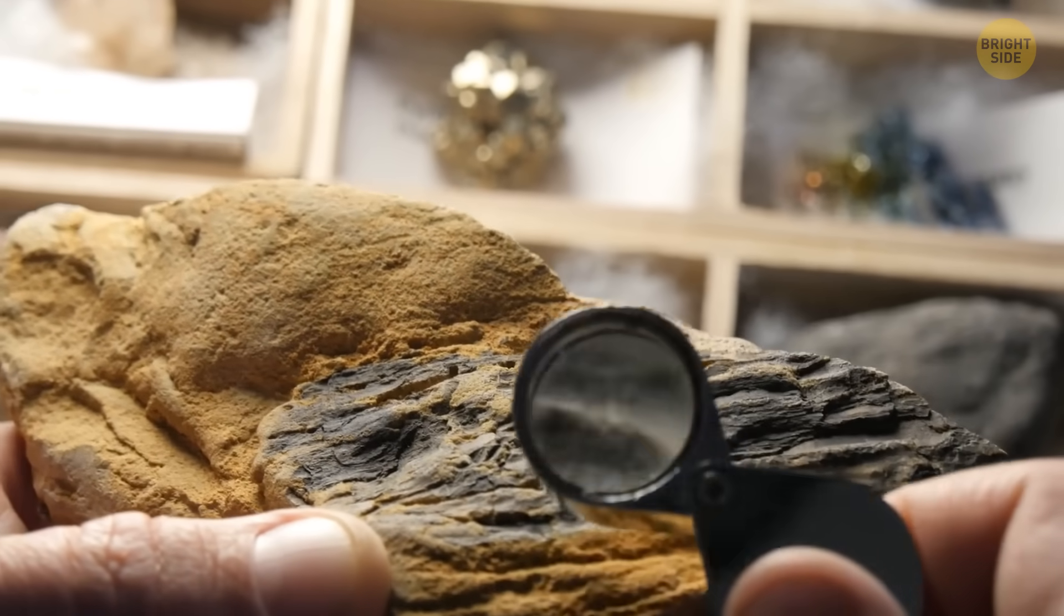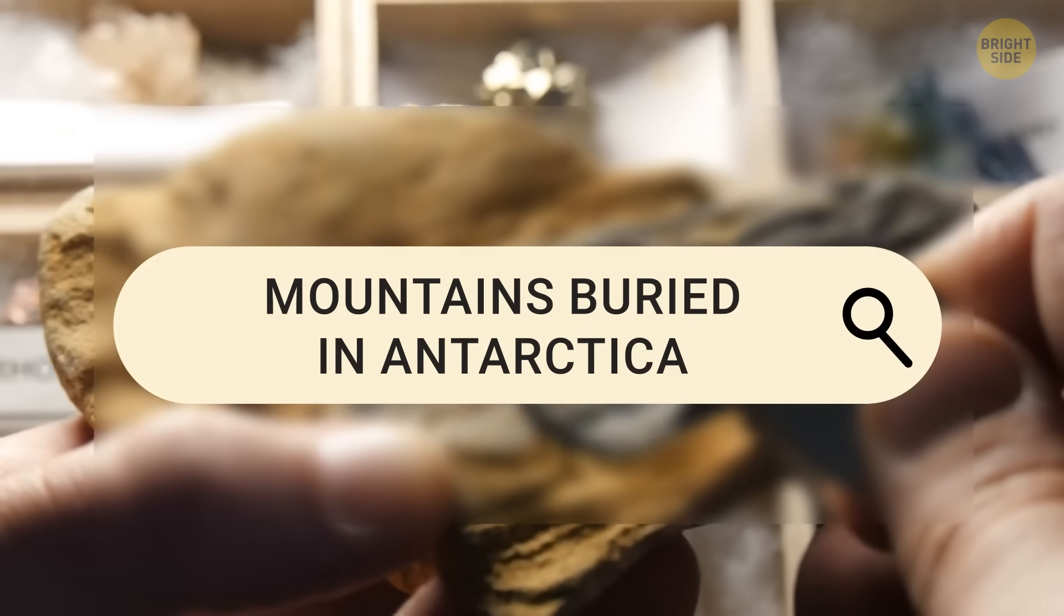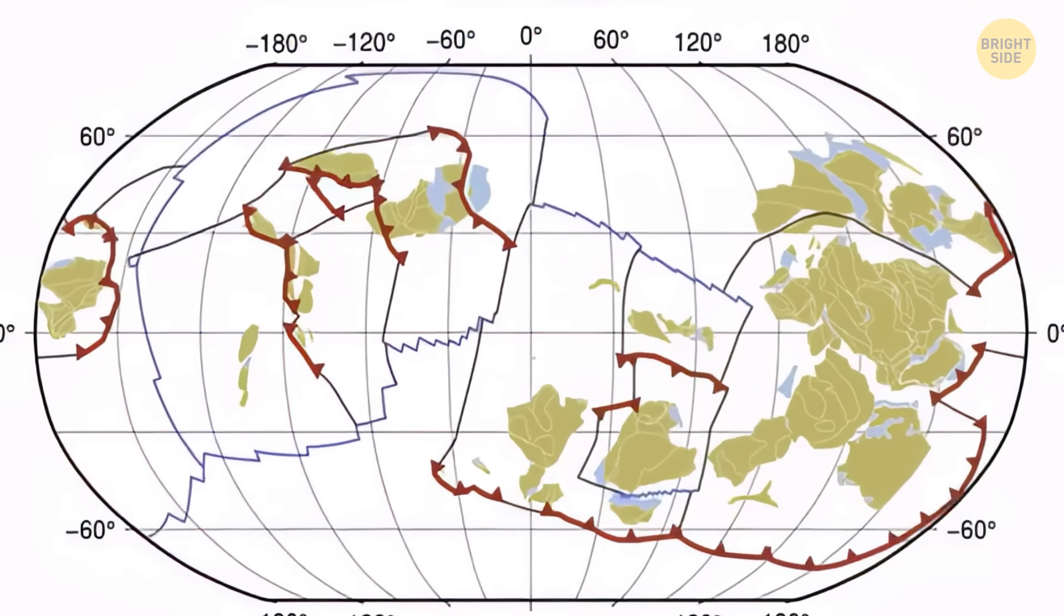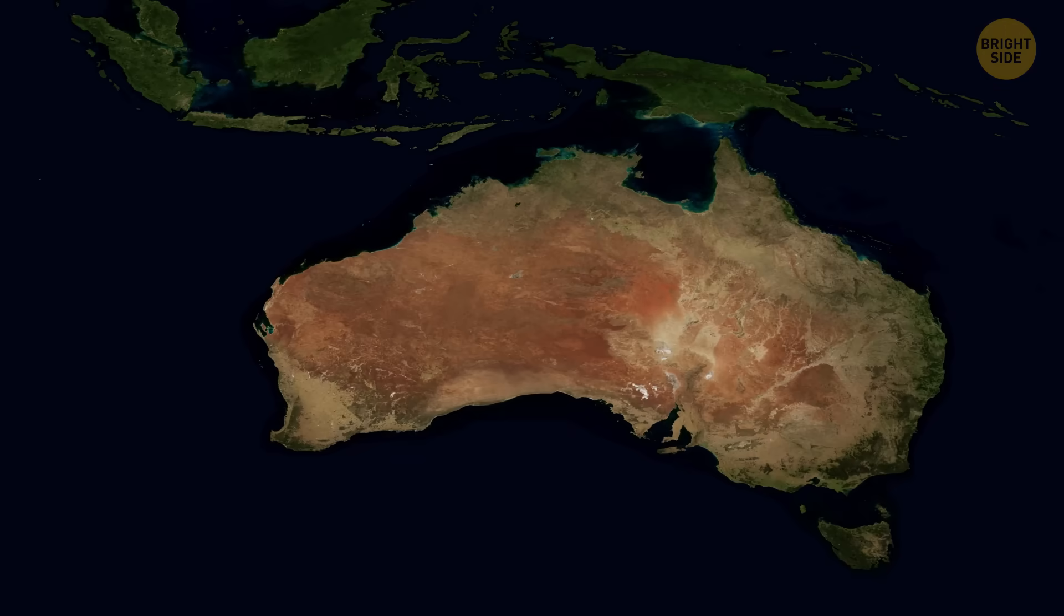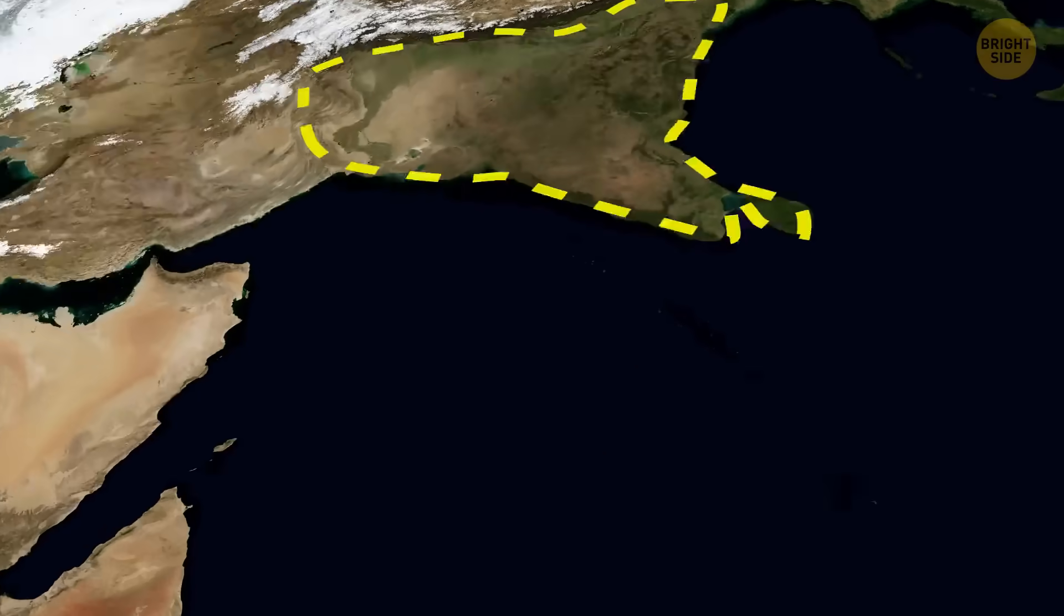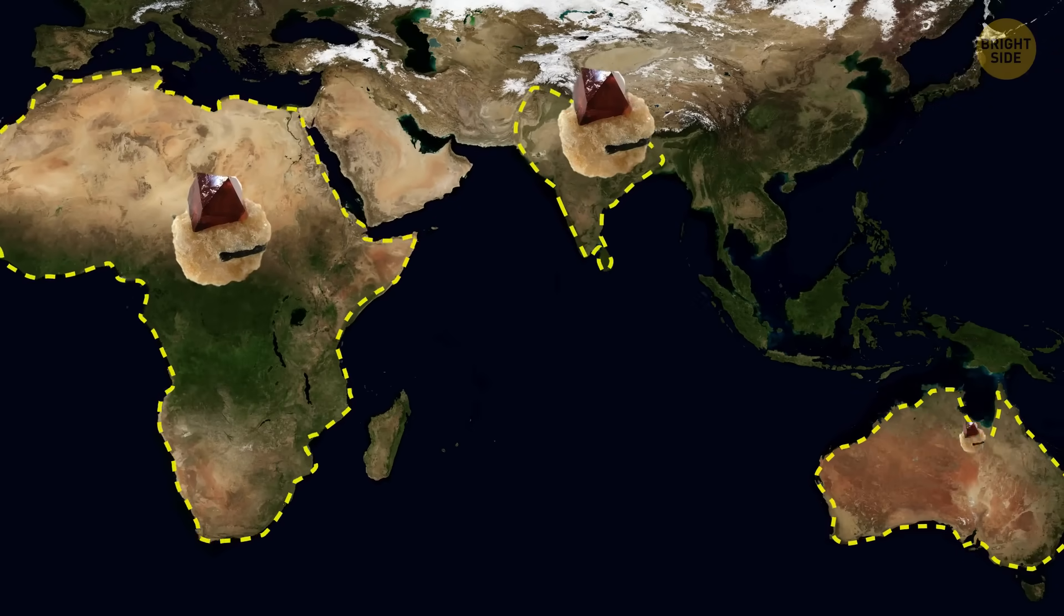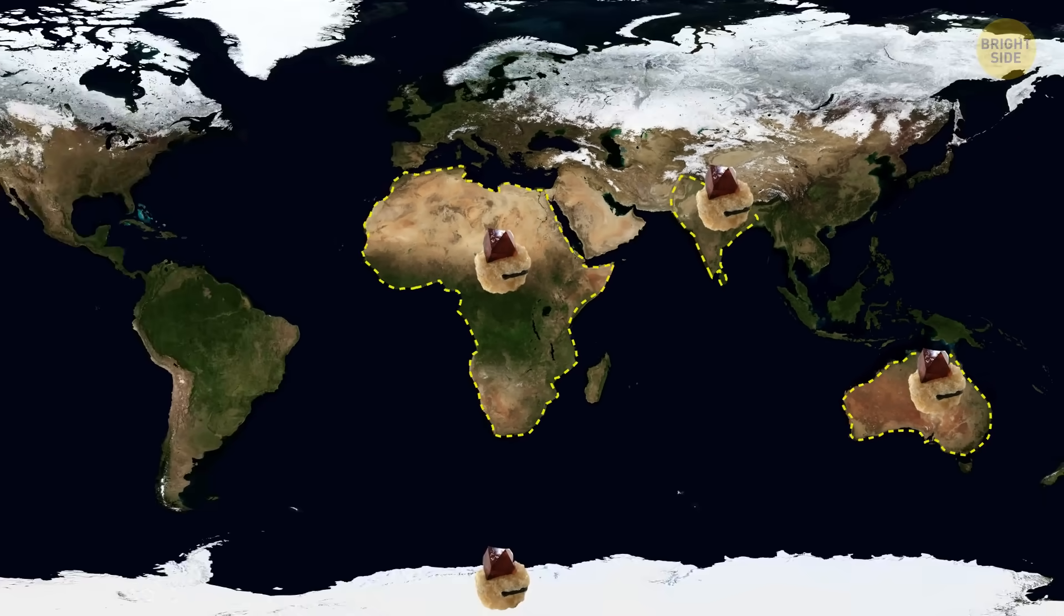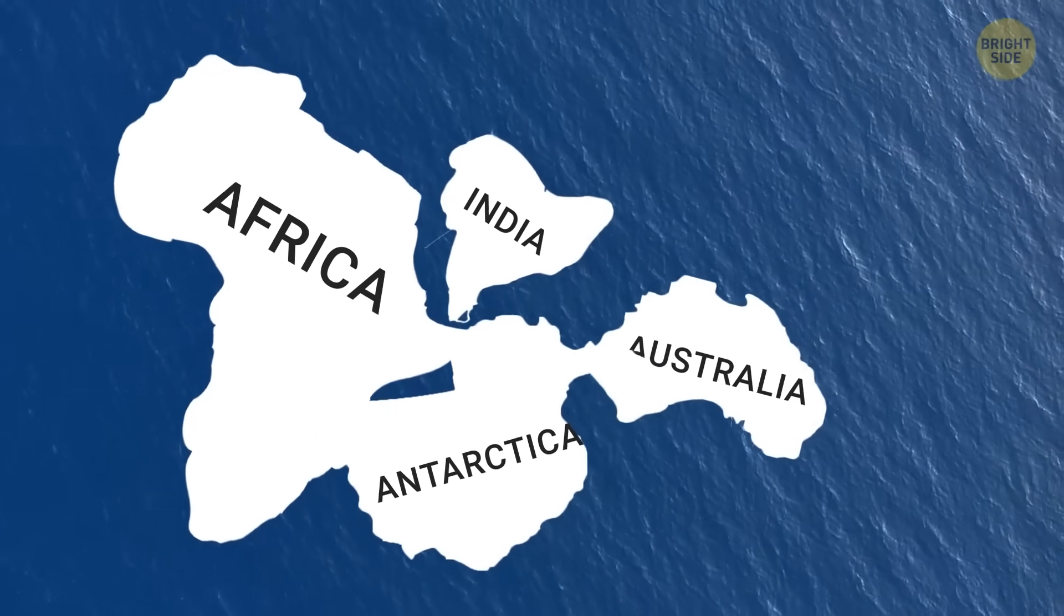Then, they compared the data obtained with the history of our planet and realized that the mountains buried in Antarctica appeared during the formation of the supercontinent Gondwana. But how did they find out that the supercontinent included Australia, India, and Africa? Zirconia from those Antarctic rocks turned out to be very similar to zirconium from those countries. That is, a long time ago, these three continents were together.